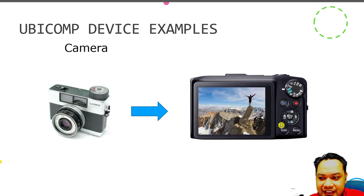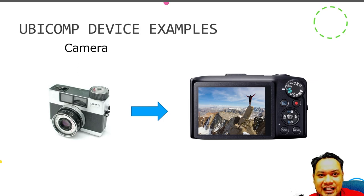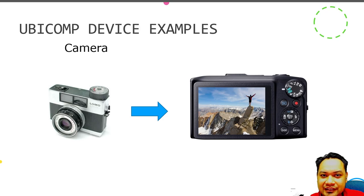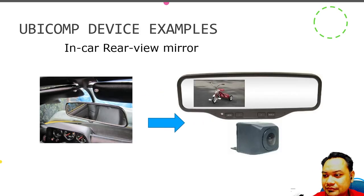Even though the digital camera is integrated with a computer, it still has physical buttons and physical dials. This is what is meant by Ubiquitous Computing allowing you to interact with the physical environment — even if it is a computer, it still has analog properties and physical interfaces like buttons, dials, lenses, and shutters that the user can manipulate.